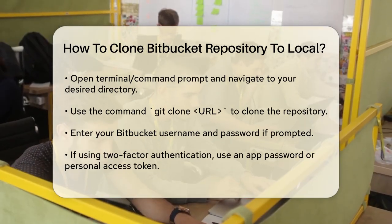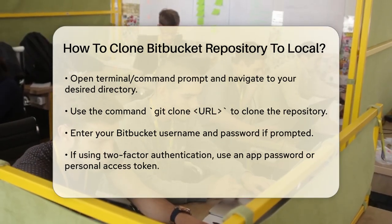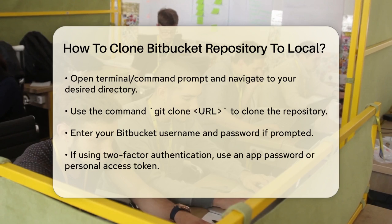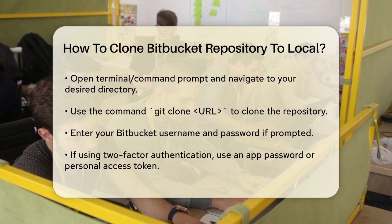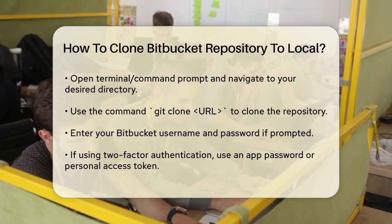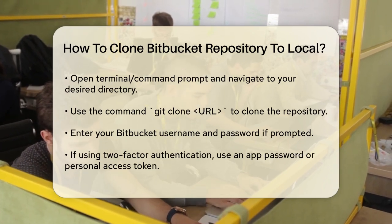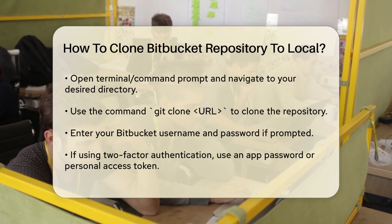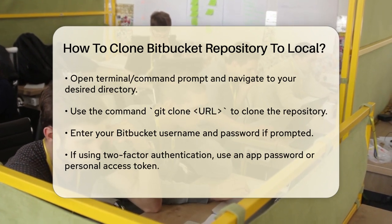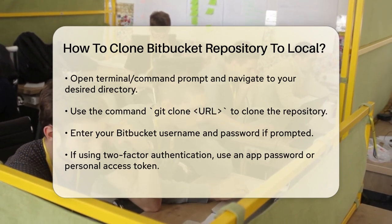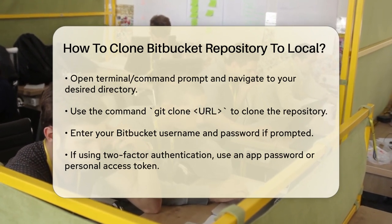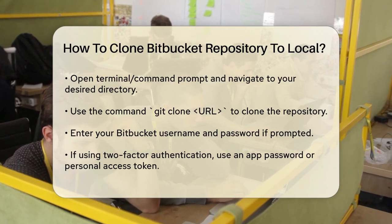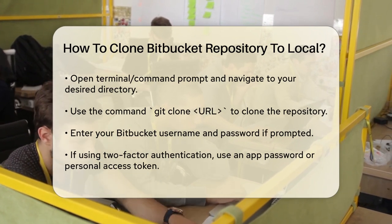Using SSH: For SSH, you first need to generate an SSH key pair if you don't already have one. You can do this using the command: ssh-keygen -t rsa -b 4096 -C your_email@example.com. Press Enter to accept the default file location and then enter a secure passphrase.